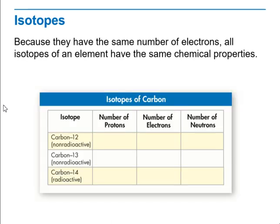Then moving to another concept which is isotopes. Because they have the same number of electrons, all isotopes of an element have the same chemical properties. Taking into consideration carbon — carbon-12, 13, and 14, with 12 and 13 being non-radioactive. The number of protons for carbon-12, carbon-13, and carbon-14 are the same. Also the number of electrons for 12, 13, and 14 are the same as well. Then we have the number of neutrons, which is going to vary between each isotope of carbon — so 12, 13, and 14 starting with six and increasing to seven and eight.